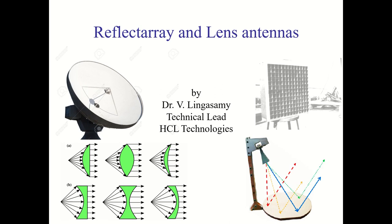So far we have seen MIMO and array antennas. One particular difference I forgot to mention: the main difference between MIMO and array is that in a MIMO antenna, each antenna is fed individually with its own individual excitation. But in an array antenna, one input is split and then fed to each element.